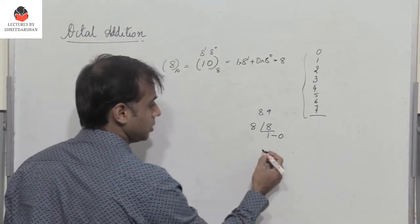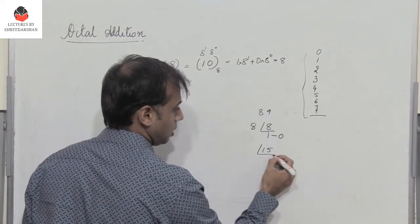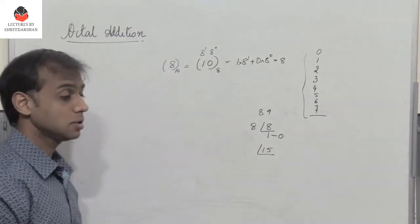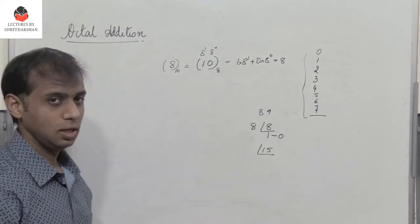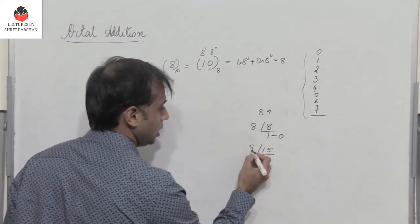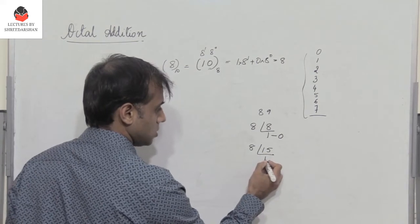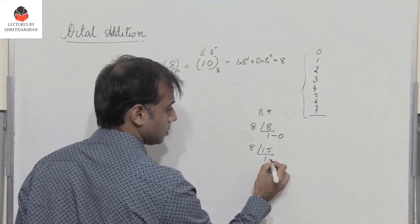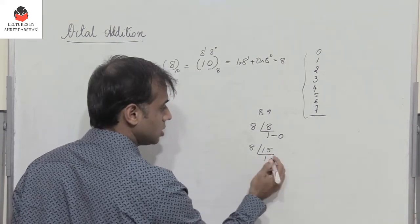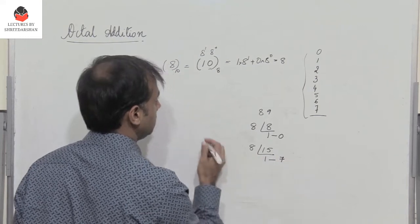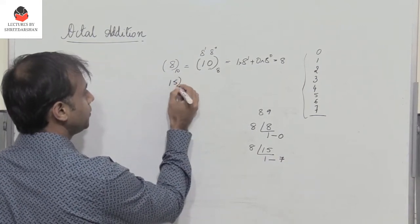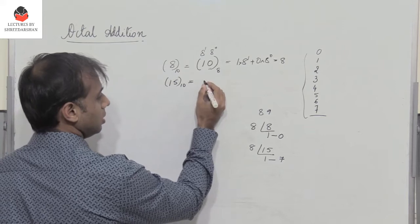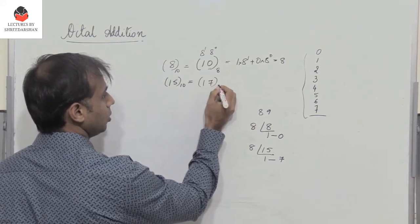Now suppose I have a number 15, decimal number 15. How do I represent this in octal? Again, I divide it by 8. I get 1 as the quotient and the remainder is 7. So the decimal number 15 is 1 7 in octal.